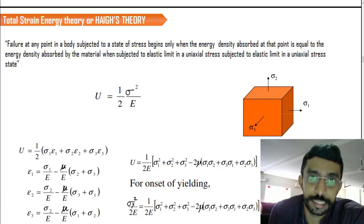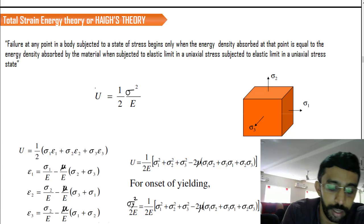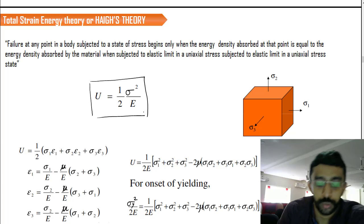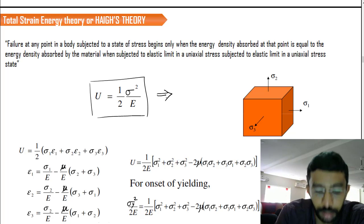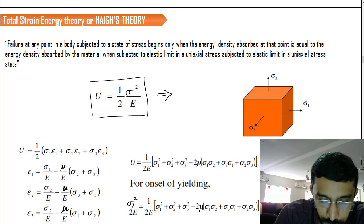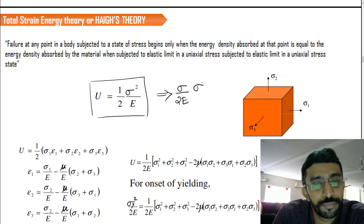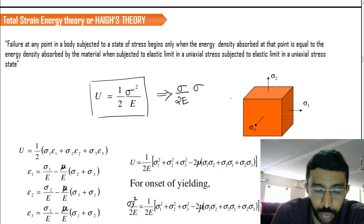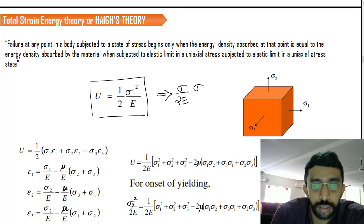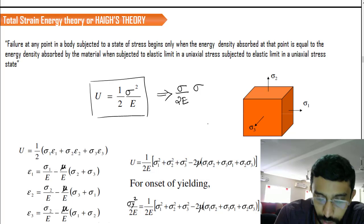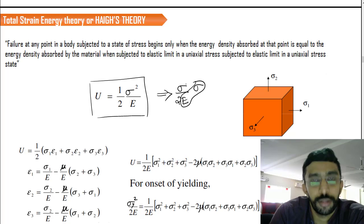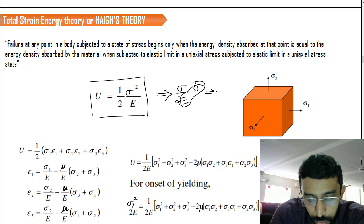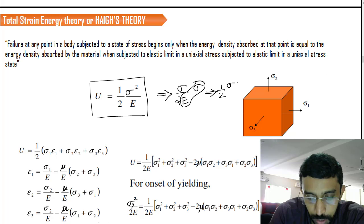The strain energy density is given by u = σ²/2E. If we rearrange this in terms of strains, we get σ/2E × σ = σ²/2E. Introducing both stress and strain into the equation, we can rewrite this as u = ½ × σ × ε. Now we have both a stress term and a strain term in the equation.